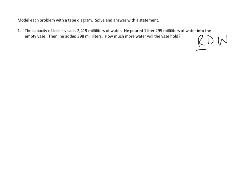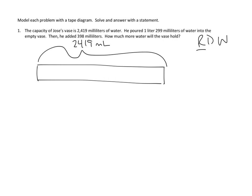We might even want to re-read to make sure that we understand it. But let's get to the drawing. We know there's a vase. I'm going to represent a tape diagram to do the entire vase. And we know the whole volume of the vase. The capacity of Jose's vase is 2,419 milliliters of water. And then we know Jose poured some amount of water into the vase. And that's this amount of water: one liter, 299 milliliters. So remembering our earlier lessons, we are going to do that conversion on the fly into milliliters. One liter is 1,000 milliliters. So I think that number is 1,299 milliliters that Jose added to the vase. And then he added another section. He added another chunk of water to that vase. And that amount was 398 milliliters.